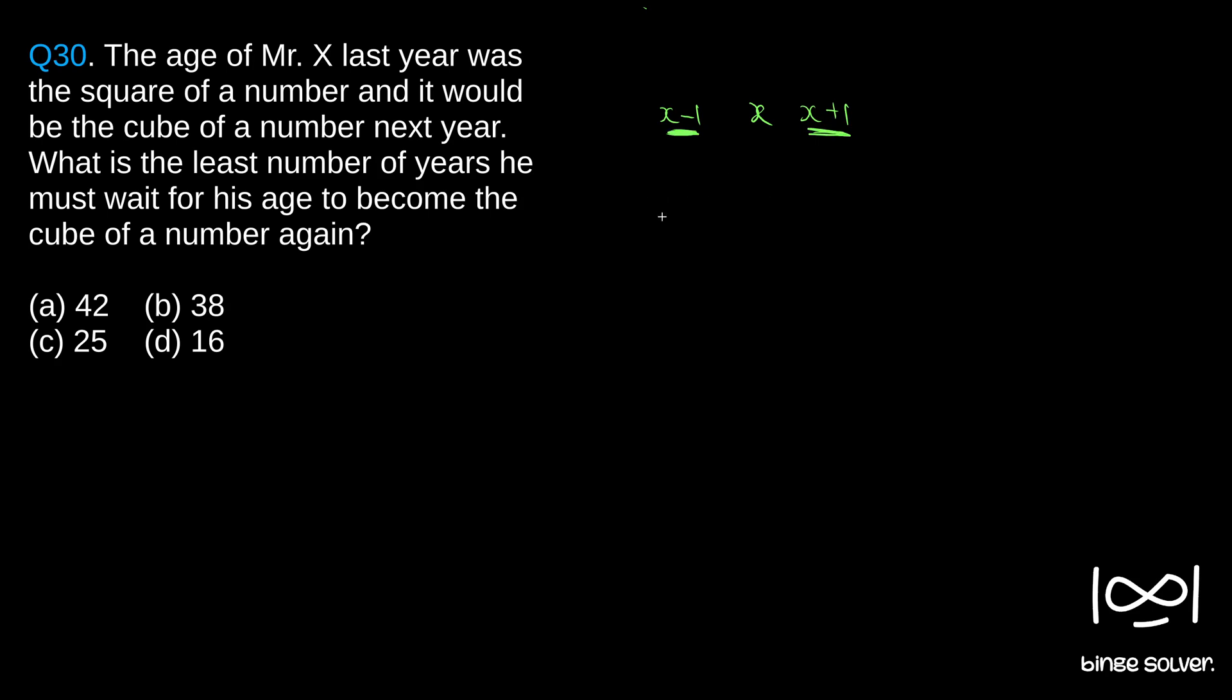So, if you write down all the perfect cubes, we will see 1 cubed is 1, 2 cubed is 2×2×2, which is 8, 3 cubed is 3×3, which is 9, 9×3